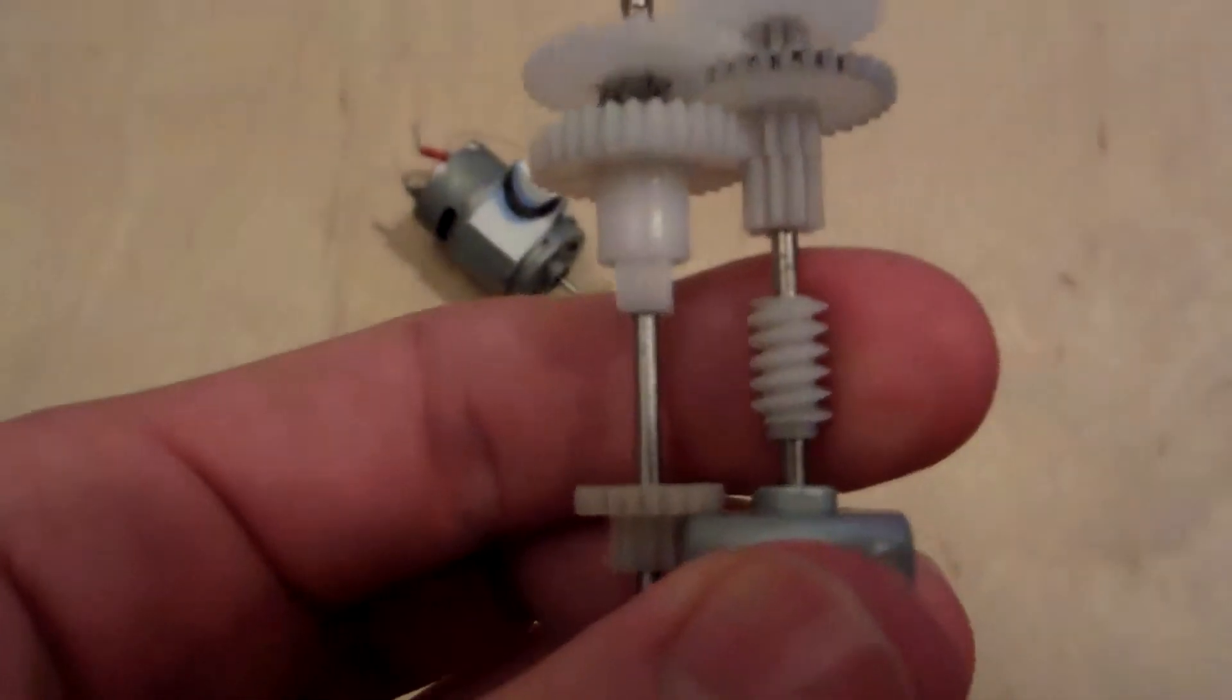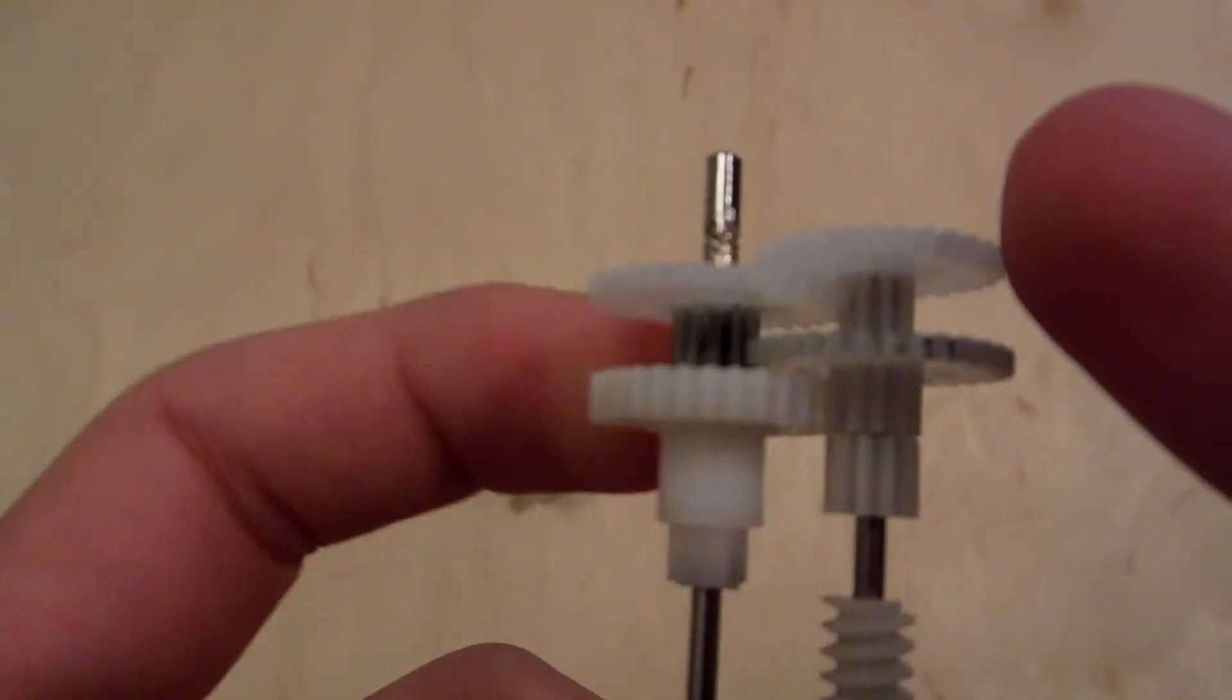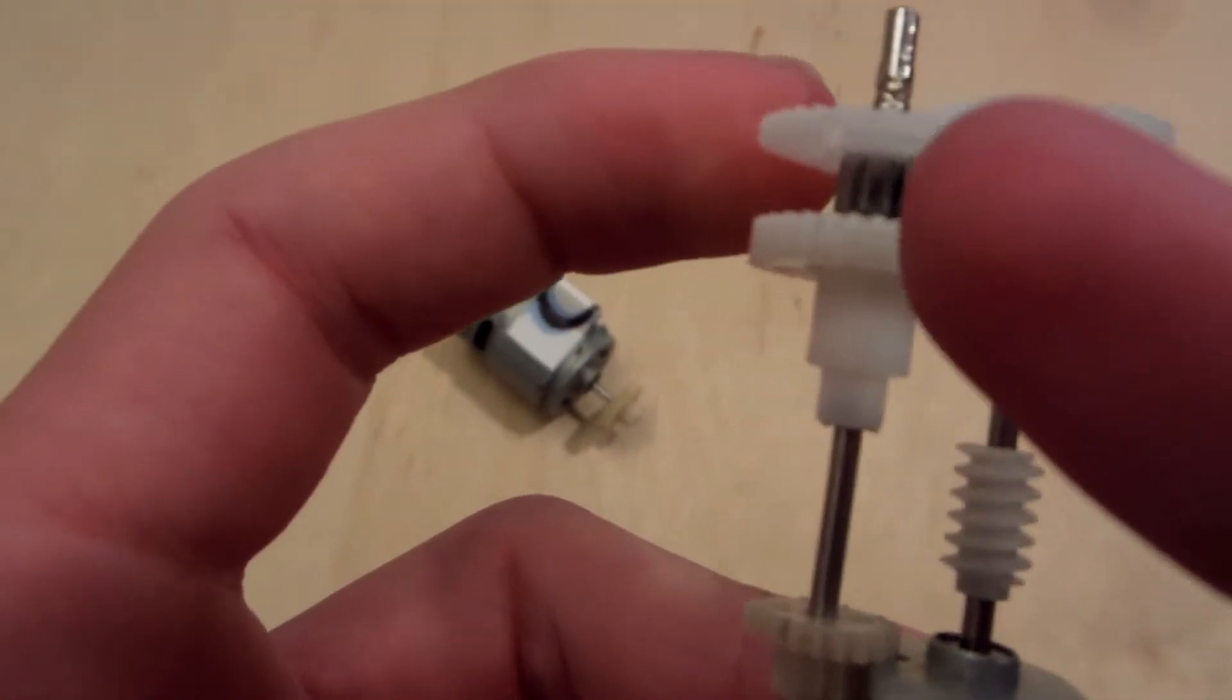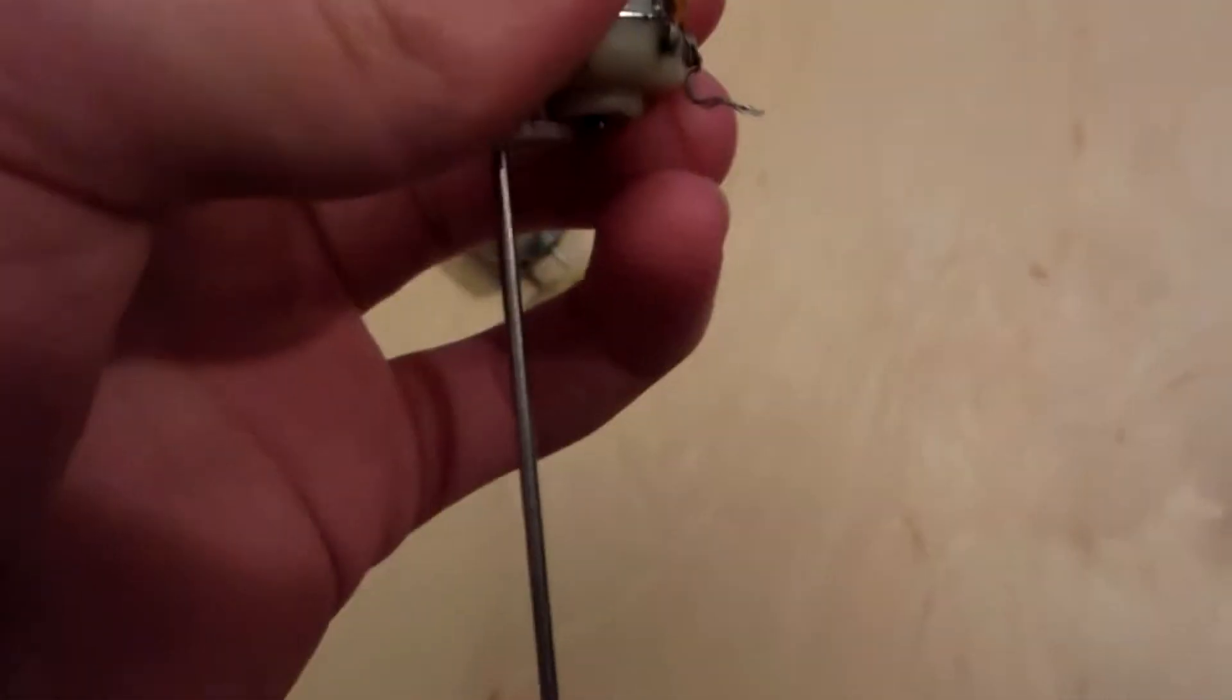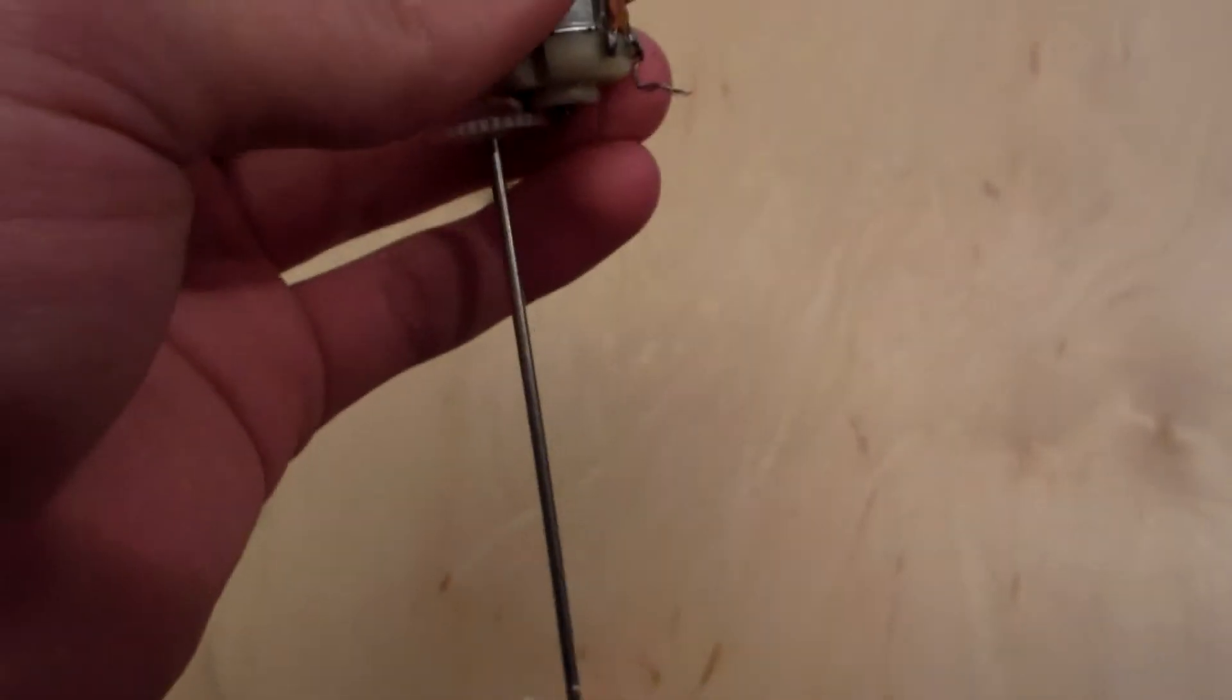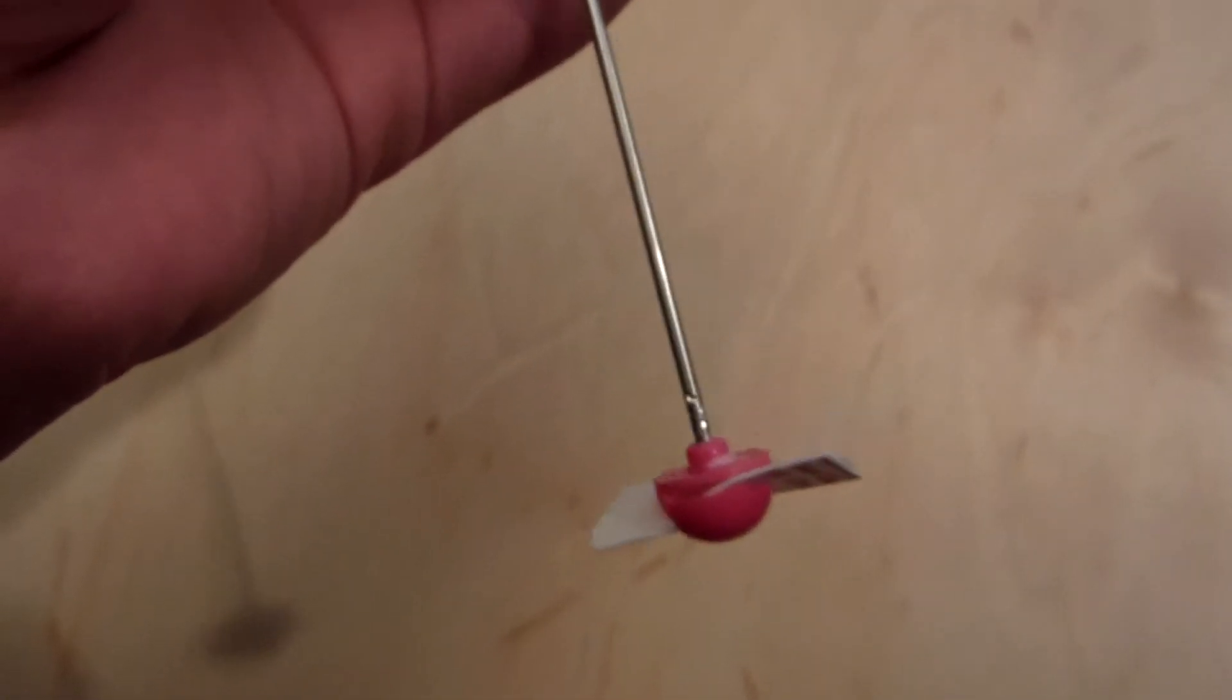So what happens in first gear, this right here drives this gear, which is a reduction, which drives this gear, which drives this gear. So you have quite the gear reduction, as you can see. You can see that moving. That's low gear.